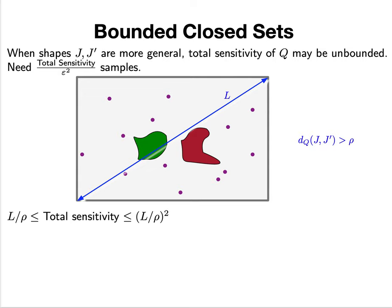The total sensitivity over ε² is roughly the number of samples we would need. We introduce two new parameters. One is L, where all landmark points Q and the shapes must lie in a domain with diameter L.